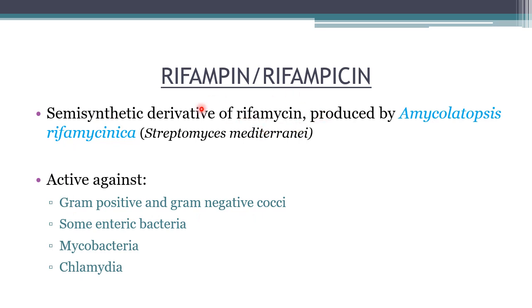The rifamycin compounds include rifampin, rifabutin, and rifapentin. Rifabutin and rifapentin are second-line anti-tuberculous drugs and will be discussed later.